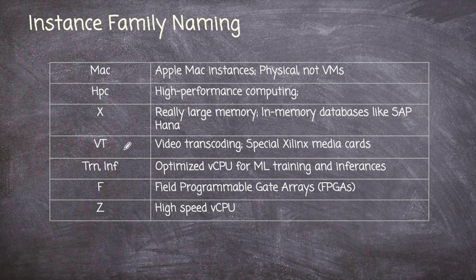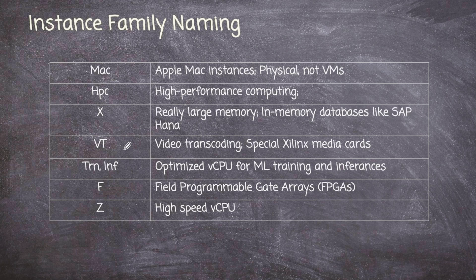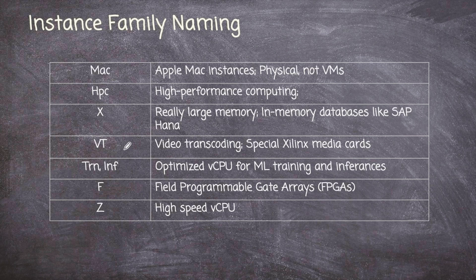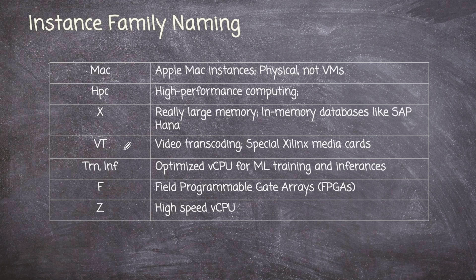We have the Mac instance type, which is a physical machine. It is not a VM. So if we go out there and select a Mac instance type, it's going to be a real Macintosh computer sitting in an AWS data center on some rack somewhere. We have high-performance computing instance types. We have X, which is a really large memory footprint. We're talking about like two terabytes of RAM. And you would use these for in-memory databases like SAP HANA. We have a very specialized instance for video transcoding called VT. We have a couple instances that are specialized for machine learning. We have something called a field programmable gate array, which that instance type will begin with an F.